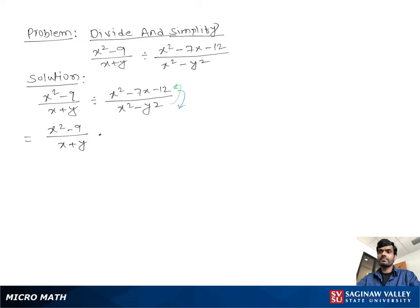Changing the numerator into denominator and denominator into numerator, we get (x² - y²)/(x² - 7x - 12). Now we multiply top to top and bottom to bottom, giving us (x² - 9)(x² - y²) over (x + y)(x² - 7x - 12).